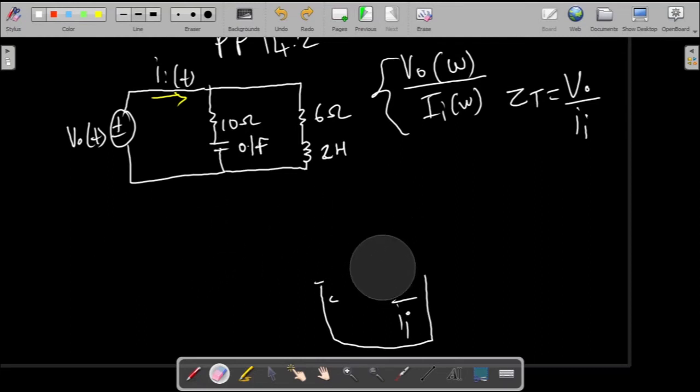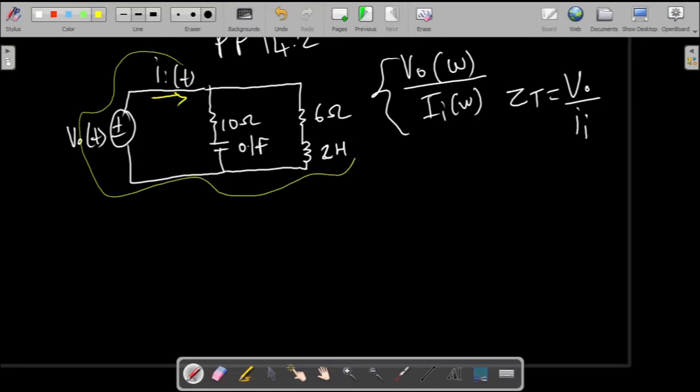Let's go ahead and find that Z_T. T stands for total, that is just how I did it. Now everything in here is in the time domain. I have to convert everything into the frequency domain. A good thing to do, or the best way to start, will be to convert all our values into impedance.